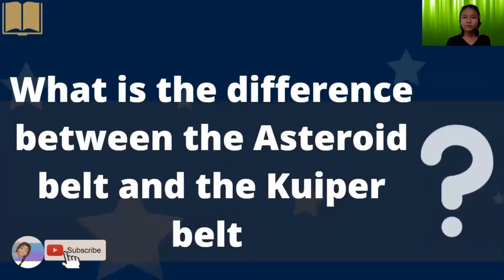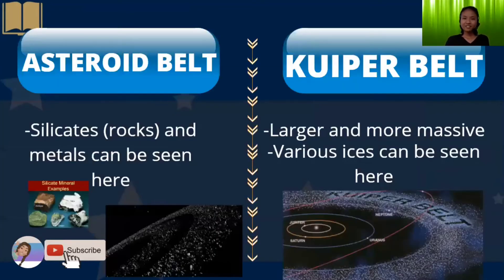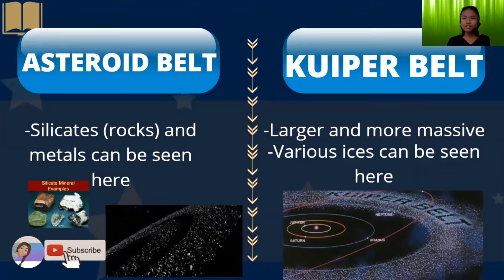Now, what is the difference between the asteroid belt and the Kuiper Belt? The asteroid belt contains silicates, rocks, and metals, as we can see with the silicate mineral examples shown. For the Kuiper Belt, it is larger and more massive, and various ices can be seen here, as we can also see in the picture.